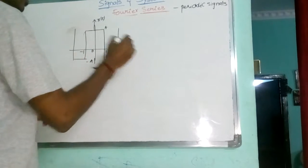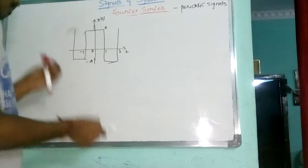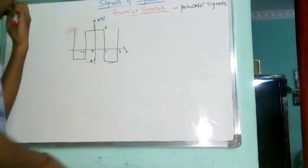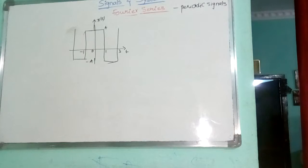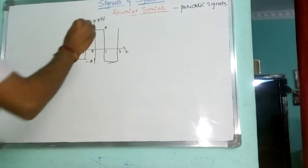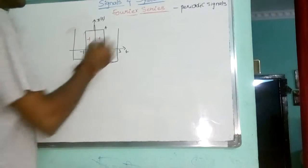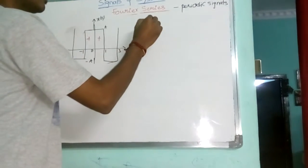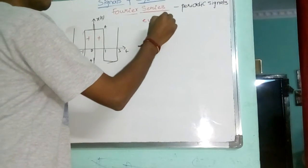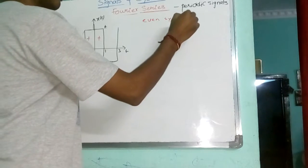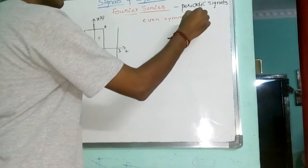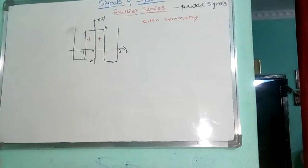They are asking us to find out the Fourier series of the signal. So, according to our steps, first thing is finding out the symmetry. This is positive, this is positive. From this, I can say this is an even symmetry signal. This signal is even symmetry.